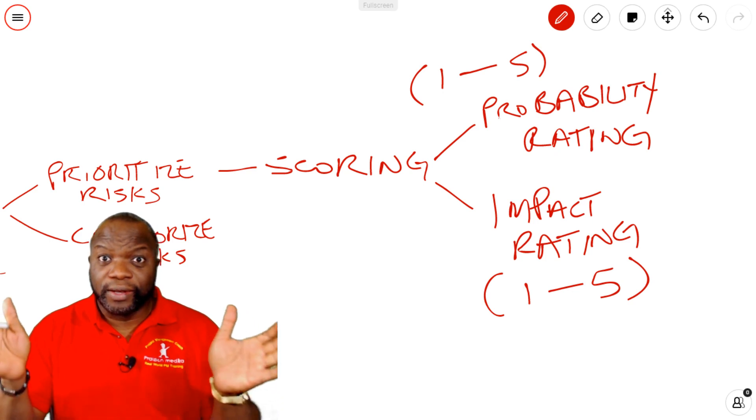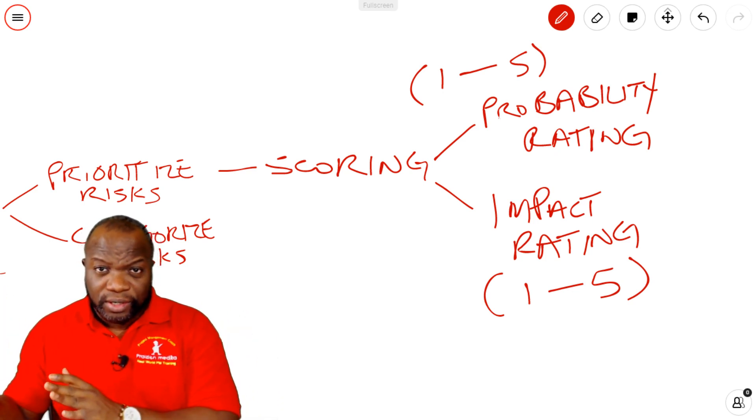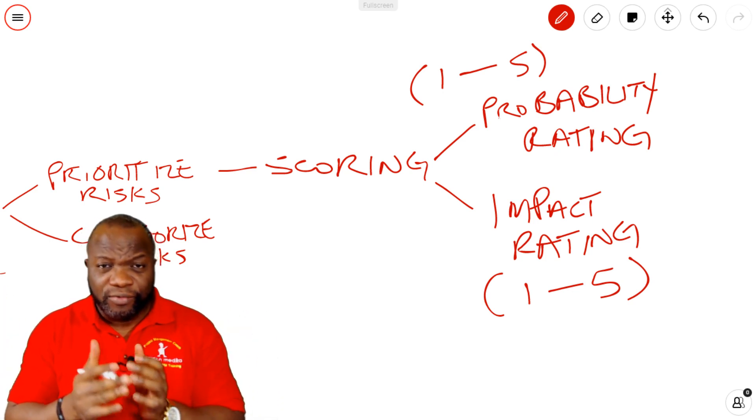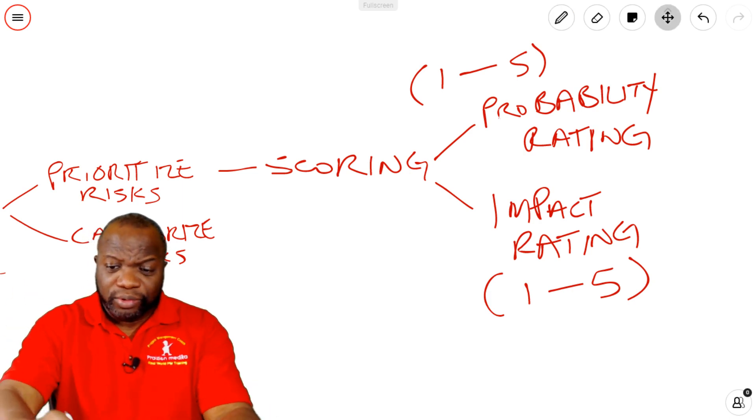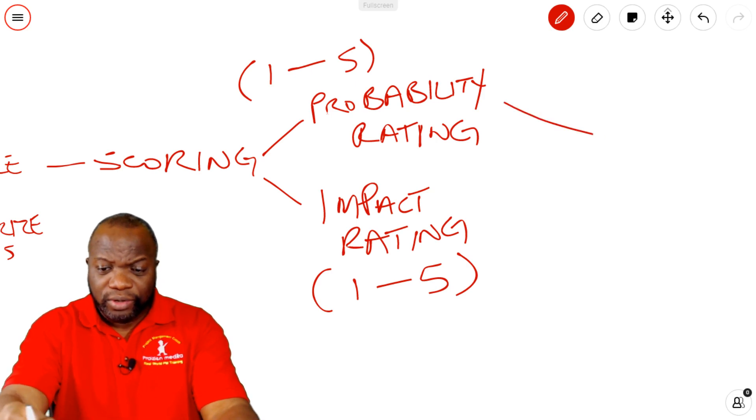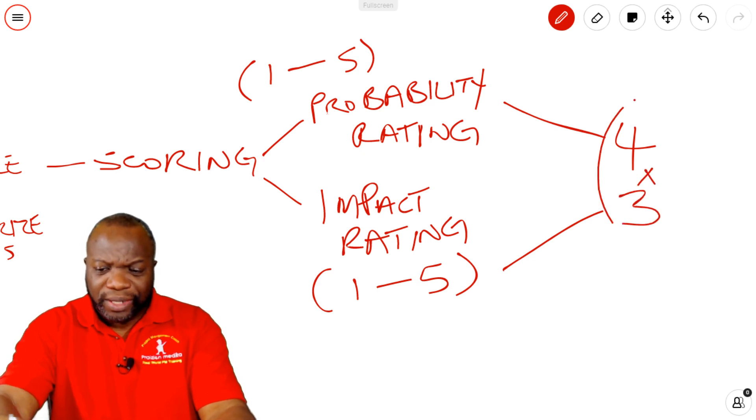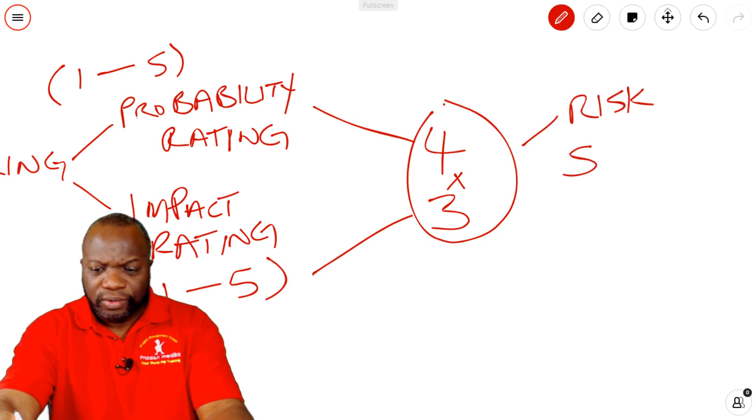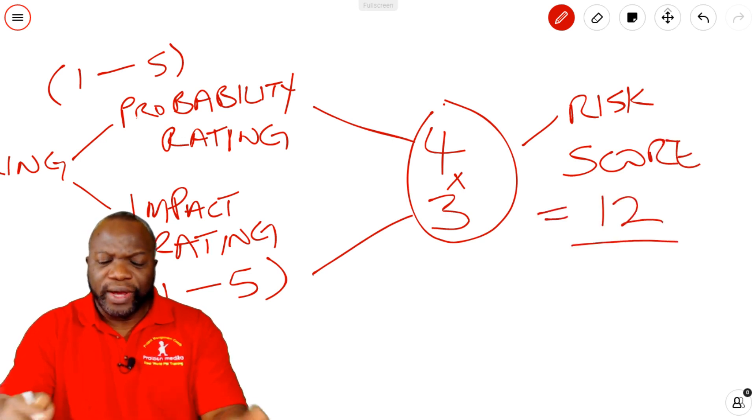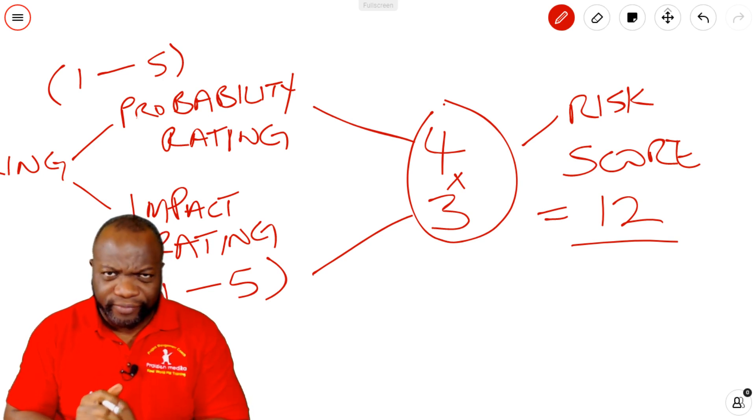These ratings mean nothing on other projects. So if on my project, I say a risk is a four probability, for example, let's take a look at that example. Four probability. And let's say on an impact, I say it's a three. Okay, we're going to multiply these. And this is going to give us the risk score. And the risk score is 12.